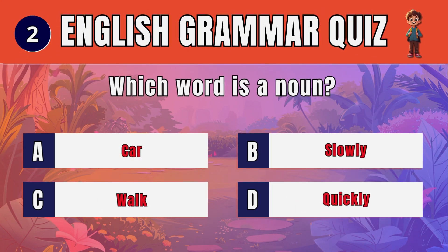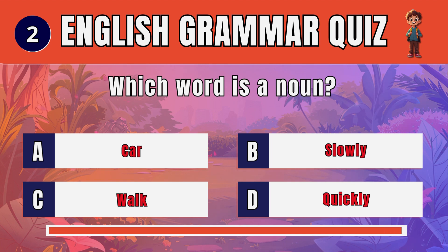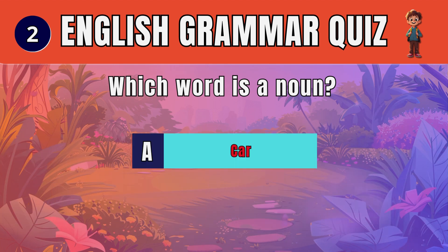Question 2. Which word is a noun? The answer is: A. car.